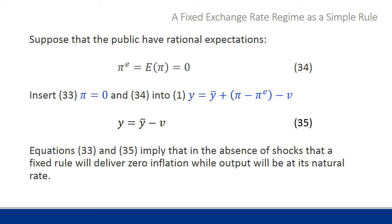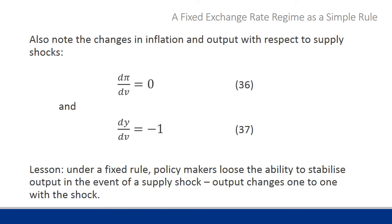We show this mathematically by setting rational expectations equal to the expectation of the inflation rate, which is equal to zero. Inserting π equals zero from slide 34, and using the aggregate supply relation, output equals its natural rate minus the supply shock v. In the absence of shocks, output will be around its natural rate. Taking derivatives with respect to the shock, the change in inflation after a shock is zero — there is no reaction of inflation to the shock — but there is a one-to-one negative reaction of output to the shock.